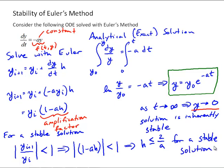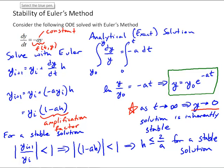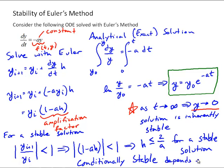In other words, this gives us a criterion on the step size to make sure we have a solution without errors growing in an unbounded fashion. If h were greater than 2/a, then y_(i+1) would be greater than y_i, and our numerical solution would be growing in time due to errors, as opposed to decreasing as the analytical solution dictates. So for this differential equation, Euler's method is conditionally stable, and that stability depends on h.